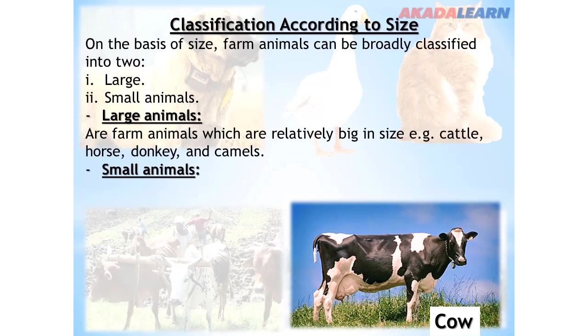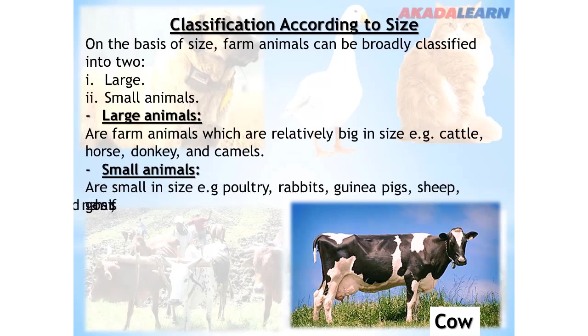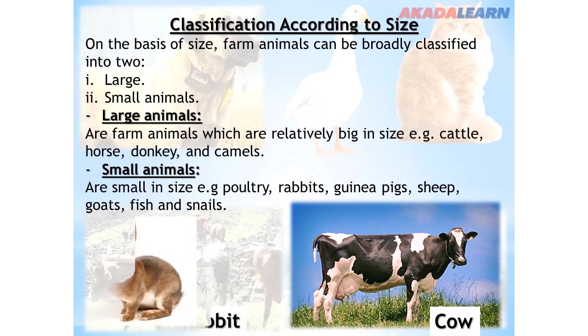Small animals are small in size. Examples include poultry, rabbit, guinea pig, sheep, goats, fish, snails, and many more.